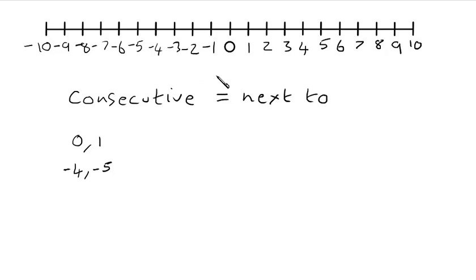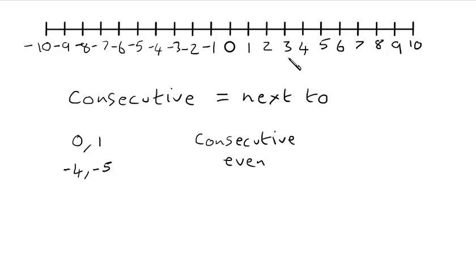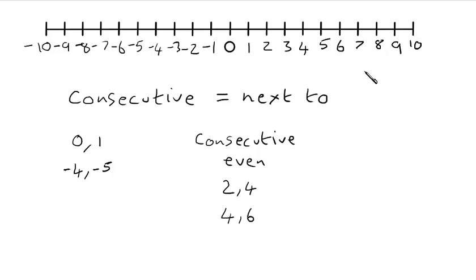But we might be asked to find consecutive even numbers or consecutive odd numbers. Consecutive even numbers means two even numbers that are next to each other — it doesn't matter if there's another number in between; it's just the two even numbers next to each other. So our even numbers are 2, 4, 6, 8, 10. Consecutive even numbers would be 2 and 4, or 4 and 6, or 6 and 8, or 8 and 10. We can also have even negative numbers: negative 2 and negative 4, negative 4 and negative 6, negative 6 and negative 8 — any of those are consecutive even numbers.